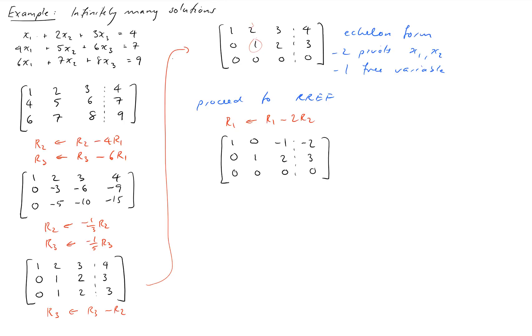Okay at this point we do our usual procedure. x3 is our free variable so we let x3 equal to a parameter t and then we solve for the other two. So the second equation tells us x2 plus 2x3 equals 3 which implies x2 equals 3 minus 2t, and then the first equation tells us x1 minus x3 equals negative 2 which implies x1 equals negative 2 plus t.